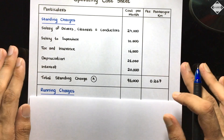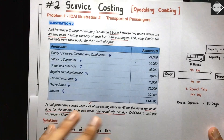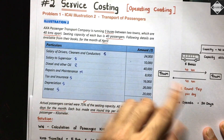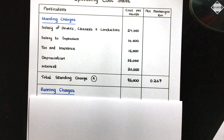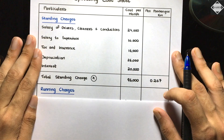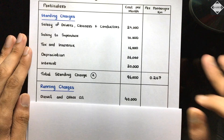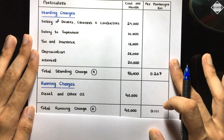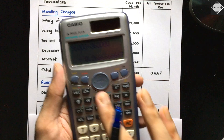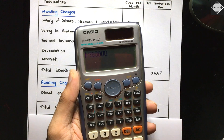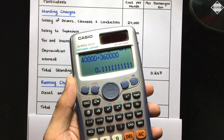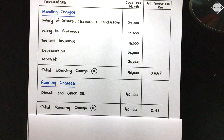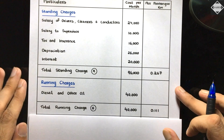Running charges: only one item here - diesel and other oil = 40,000. Total running charges = 40,000. Cost per passenger kilometer = 40,000 ÷ 360,000 = 0.111 (three decimals: 0.111).